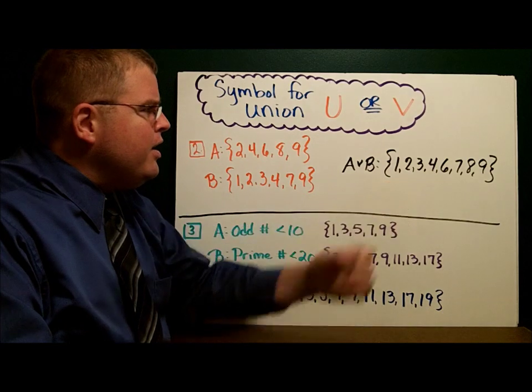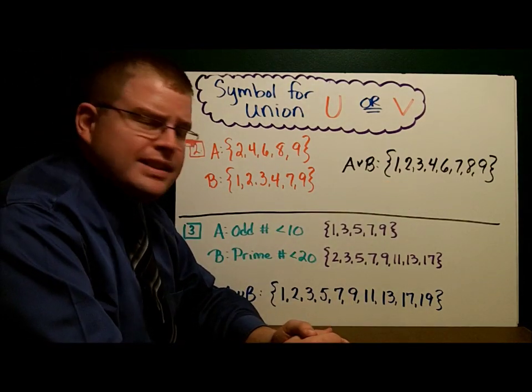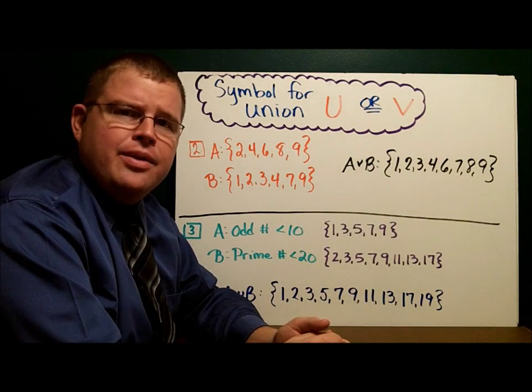That gives us this set here: 1, 2, 3, 4, 6, 7, 8, 9. That's the set A union B.